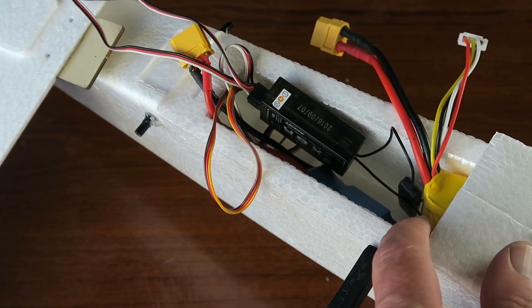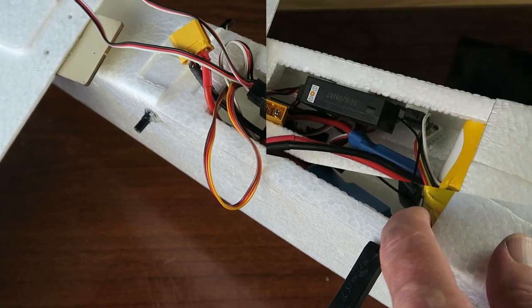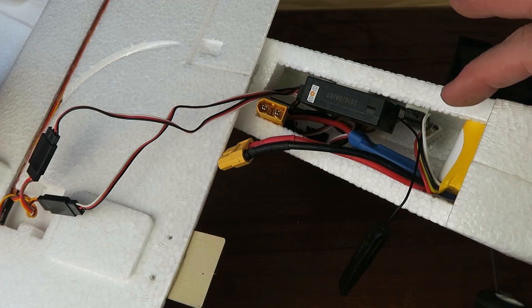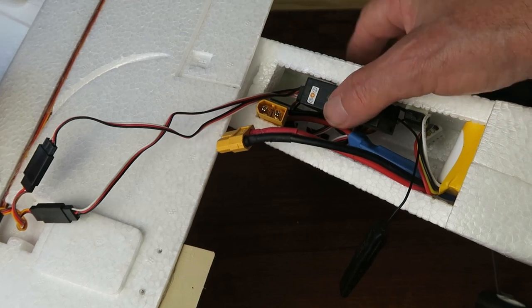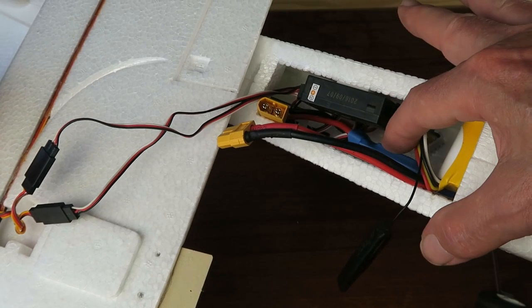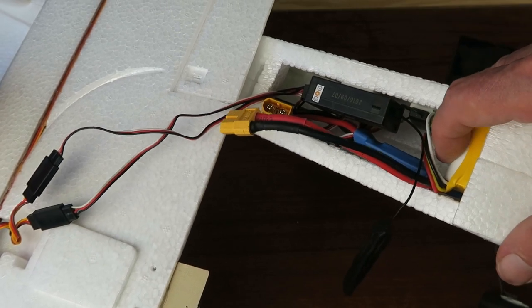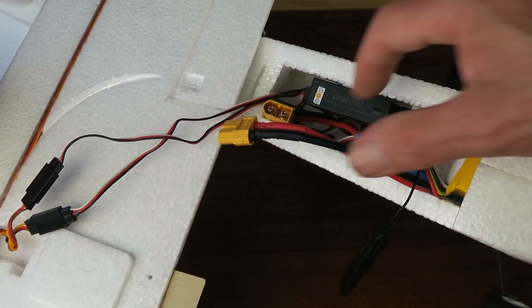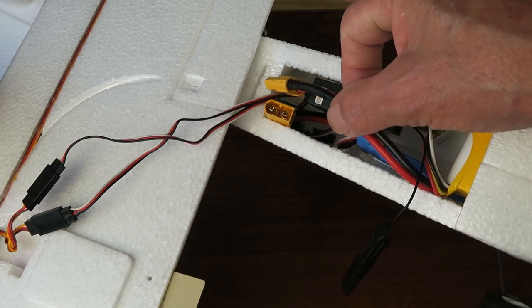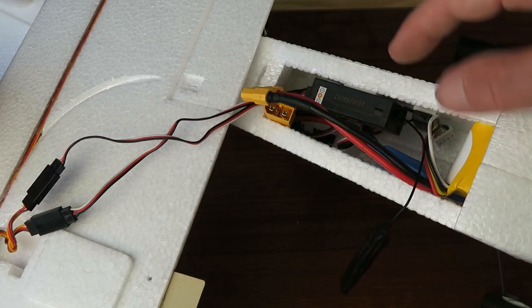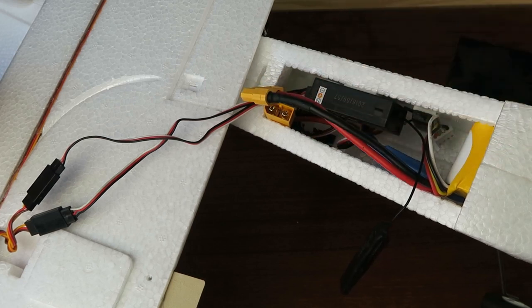Everything's put in place now. The receiver is stuck to the side there, the speed controller here, and the battery pushed right forward. The battery connections will go together there and there should be plenty of room to get the wing on top.